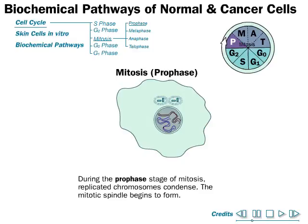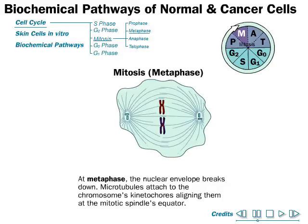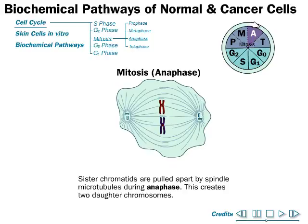During the prophase stage of mitosis, duplicated chromosomes condense and the mitotic spindle begins to form. The microtubule organizing center is duplicated and attaches to the different chromosomes. In metaphase, the nuclear envelope breaks down and microtubules align the chromosomes at the mitotic spindle equator, forming what is called the metaphase plate.